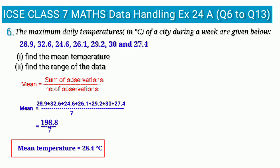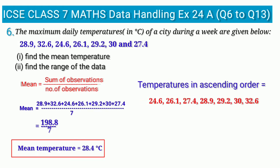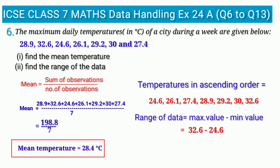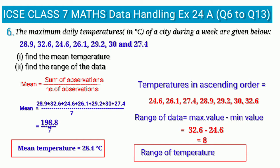The second part of question 6 is to find the range of the data. We arrange the temperatures in ascending order. Range equals maximum value minus minimum value. Here maximum is 32.6 and minimum is 24.6, so 32.6 minus 24.6 equals 8. The range of data is 8.